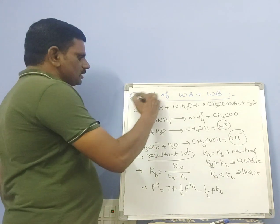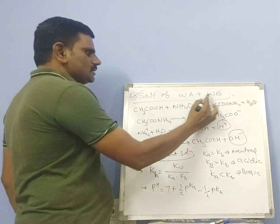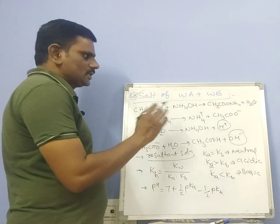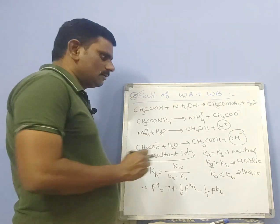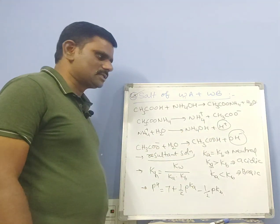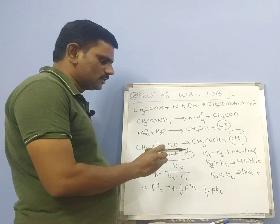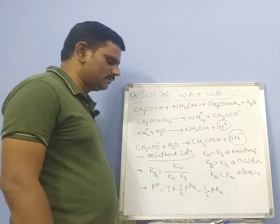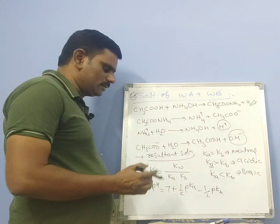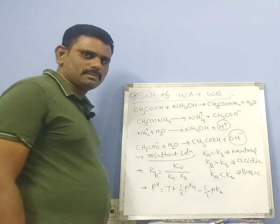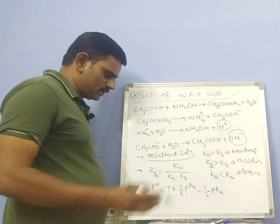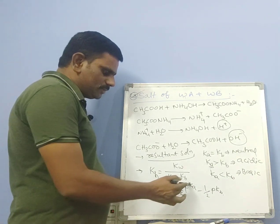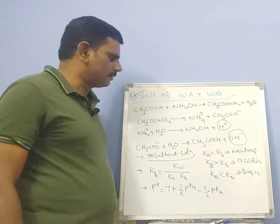In summary for salt of weak acid and weak base: both cationic and anionic hydrolysis take place, and both H⁺ and OH⁻ ions are produced. The nature of the solution — neutral, acidic, or basic — depends on the relative ka and kb values. The hydrolysis constant uses ka × kb in the denominator, and the pH formula is pH = 7 + ½pKa − ½pKb. This point must be remembered.